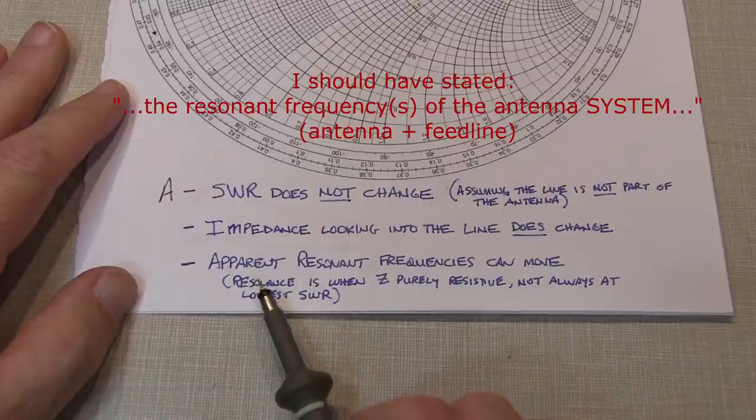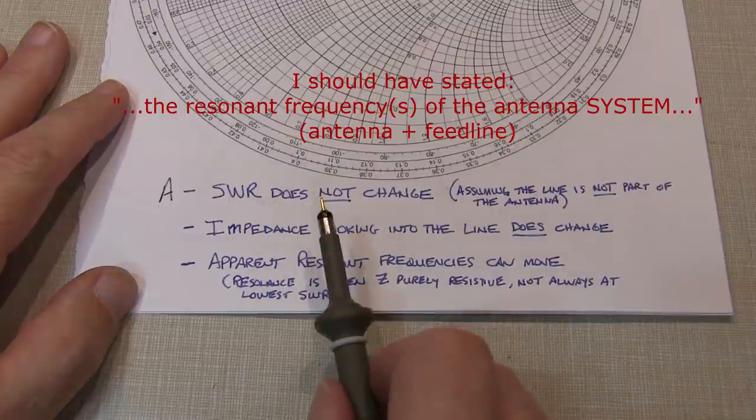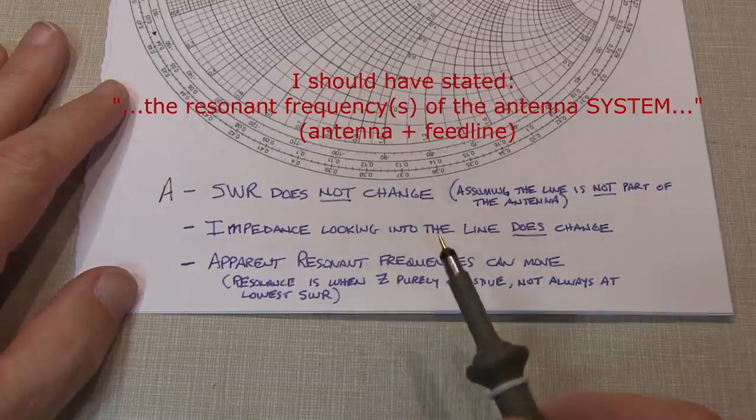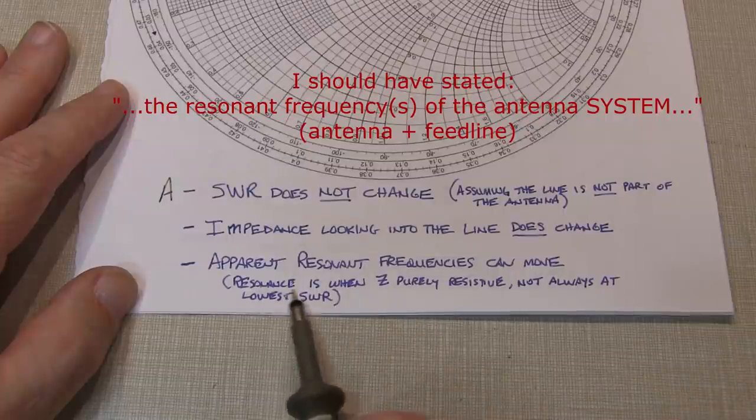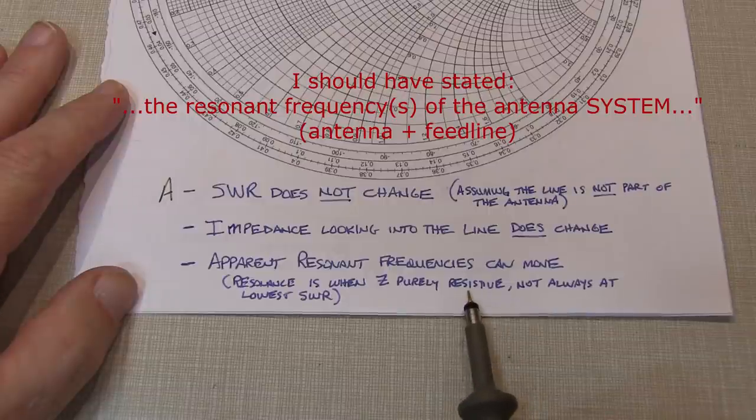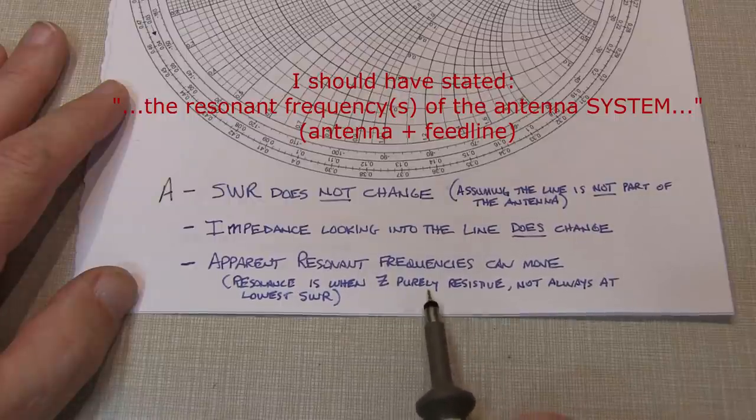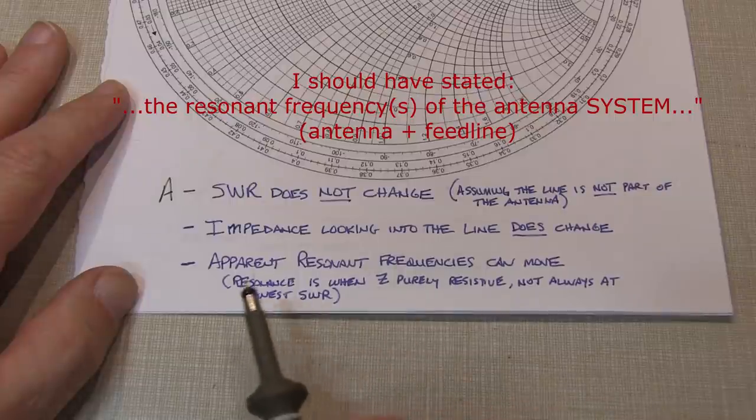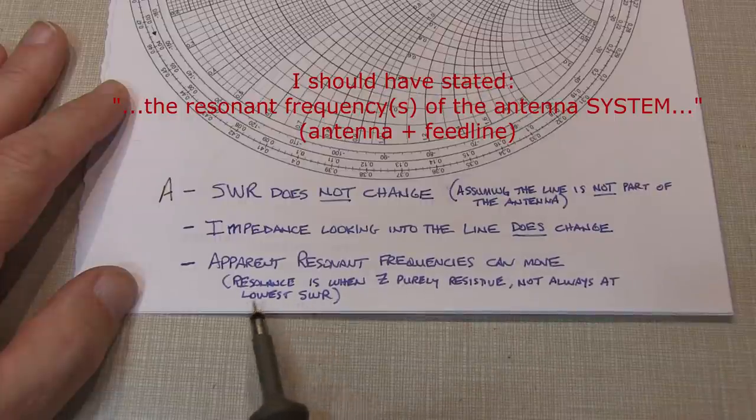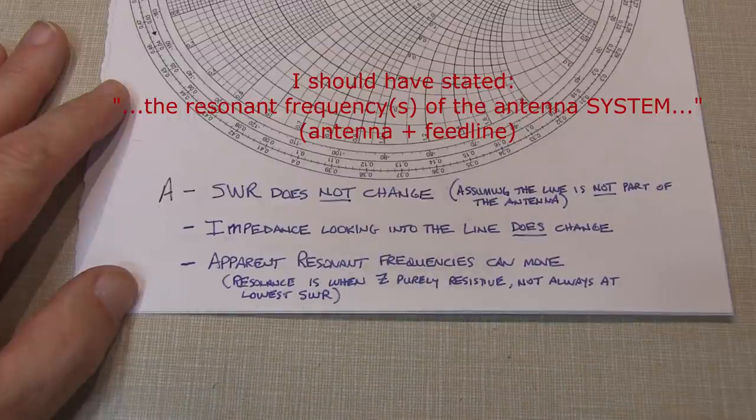Now, the other thing that people get surprised at is that the apparent resonant frequencies of the antenna can move around as you add or subtract line length. And of course, that's assuming that the resonant point is not at the perfect center of the Smith chart right at 50 ohms. Now, remember that resonance is only defined as when the impedance is purely resistive. There's no reactive component. So that could be 40 ohm resistive, 55 ohm resistive, 100 ohm resistive, etc. All those are resonant points. But also, it's important to remember that the resonant point is not always where you have the lowest SWR. So don't confuse the lowest SWR or the minimum in the SWR as being the resonant point of the antenna, because that's not always the case.